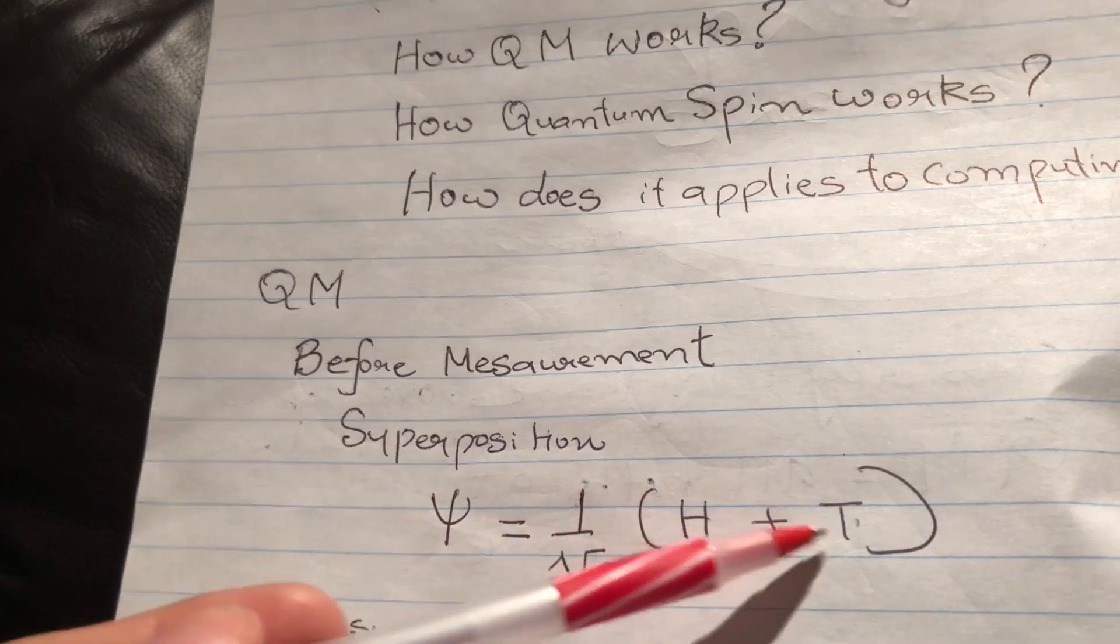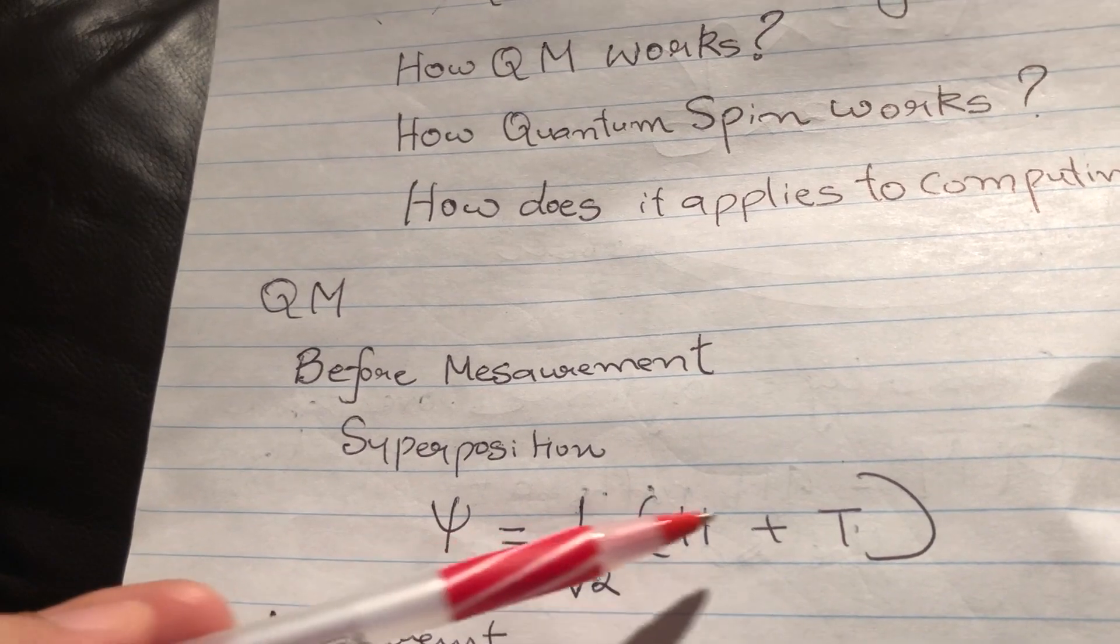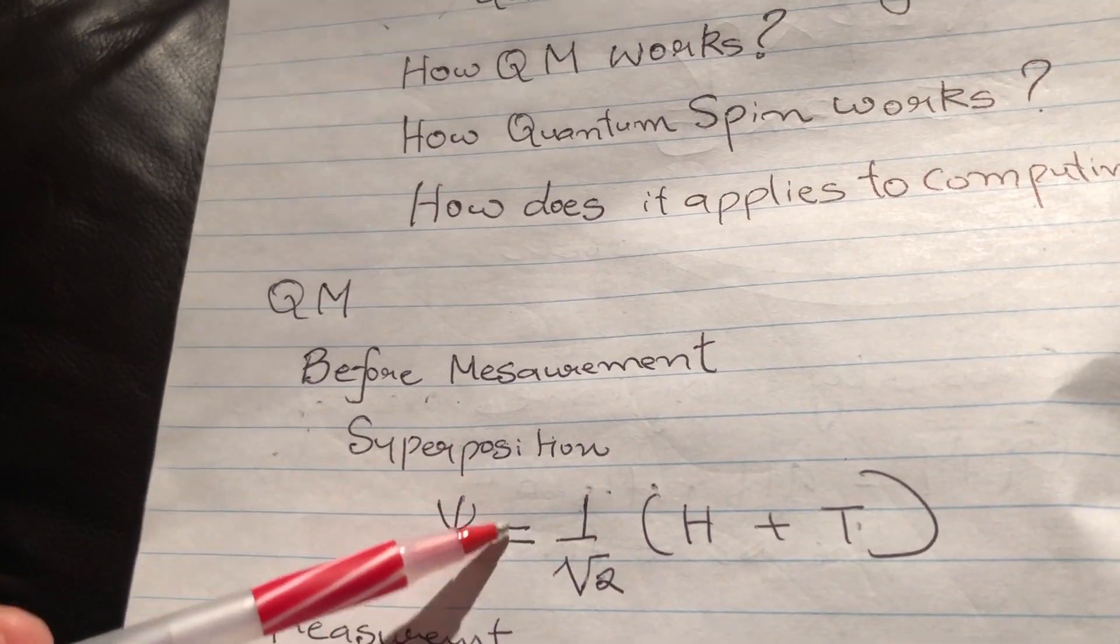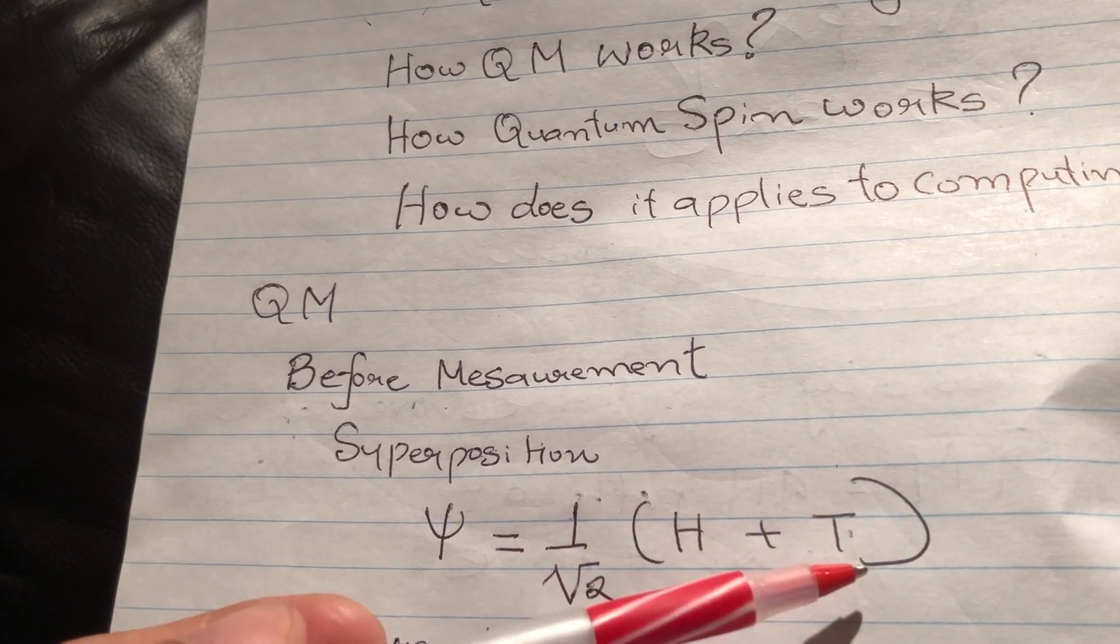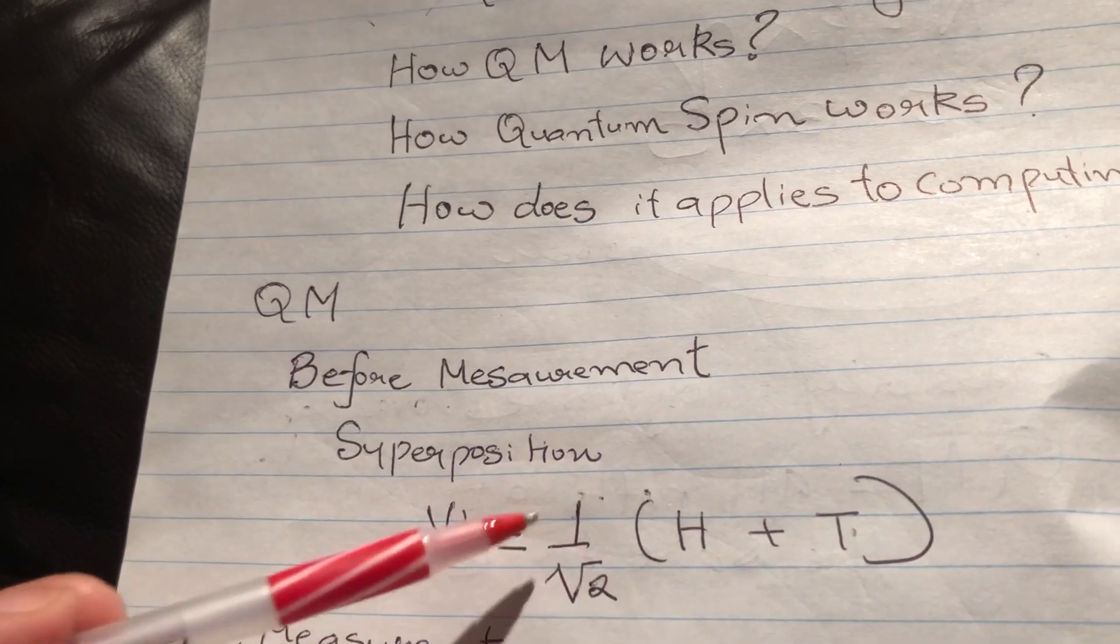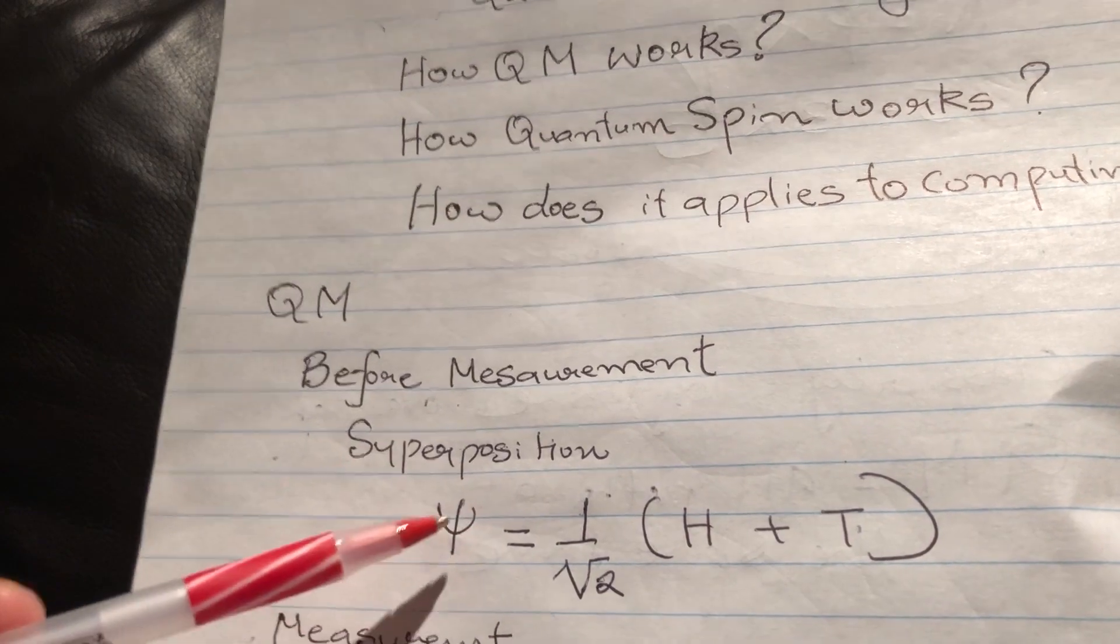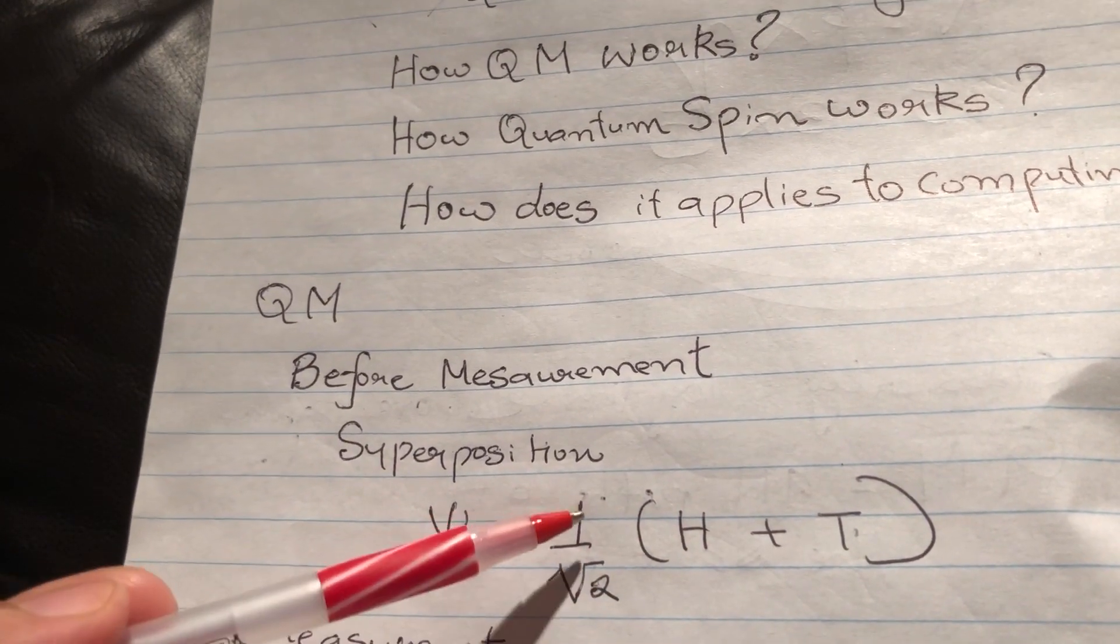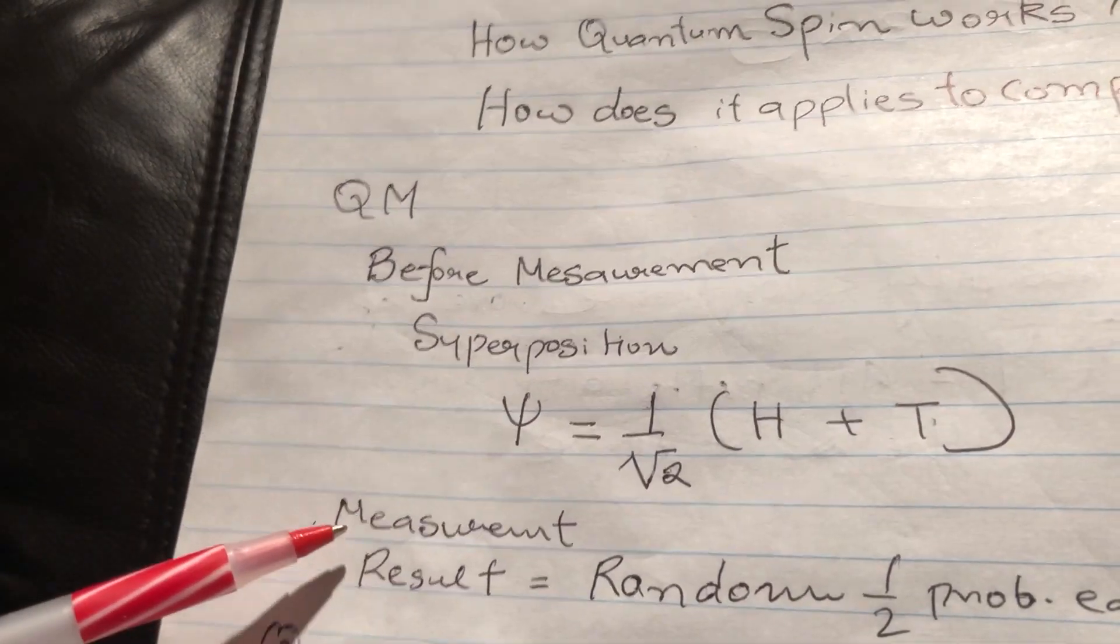So before we do any measurement, the quantum state is in a superposition of available choices. These are just two choices because it's a coin. The choices could be hundreds, like if you are looking for where the quantum particle is—it could be here, could be there, could be somewhere. So you'll have more than one choice. Let's take the simplest case: two states, heads or tails, 50% probability each.